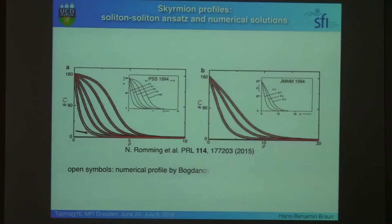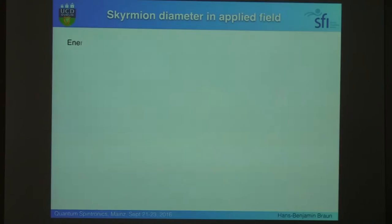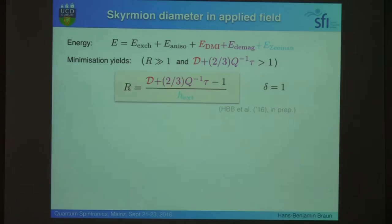That motivates us to actually use this as a variational ansatz. So, what we do is, we can actually insert this into our energies, as I described that, which is here, and then, what we see, we immediately get the field dependence of a skyrmion radius.